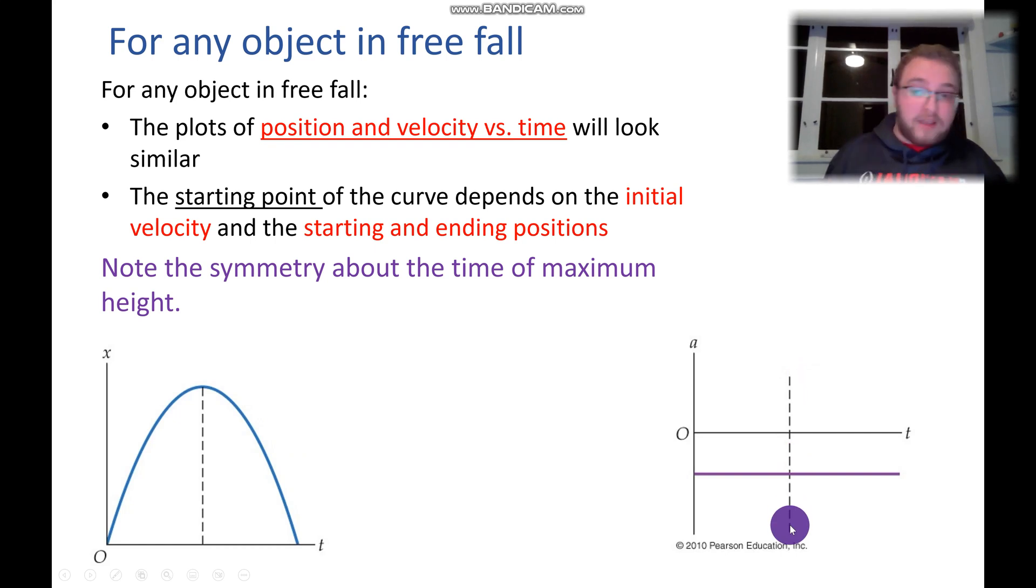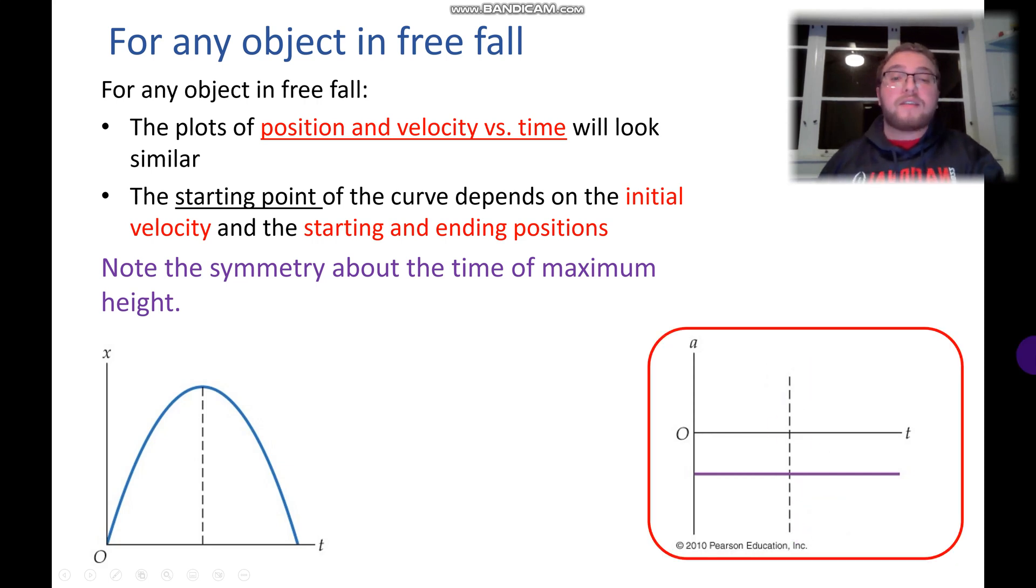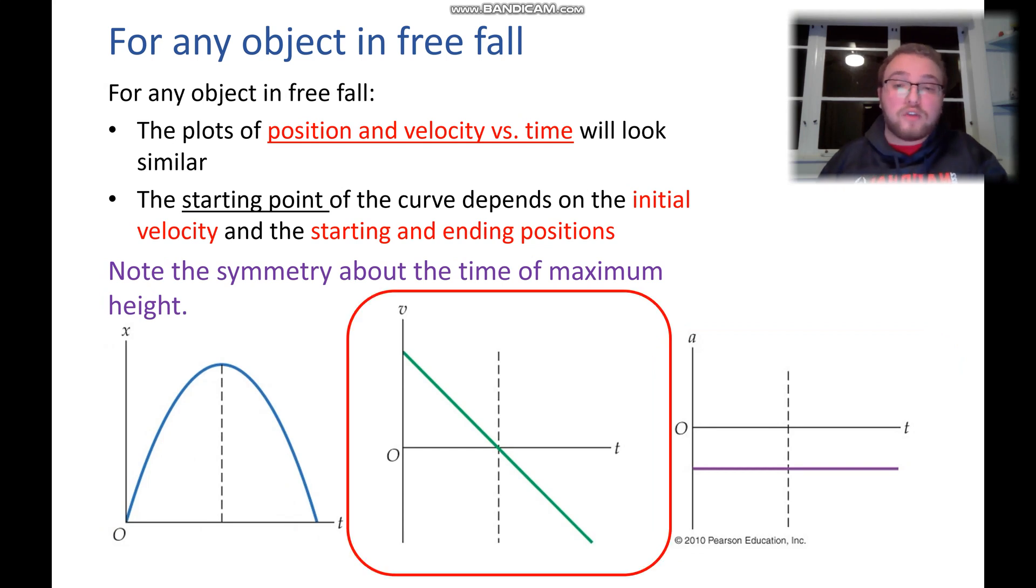Now that's much less exciting because our acceleration, as we know, is constant at 9.8 meters per second squared downwards. But at our maximum height here, we still have that symmetry on either side. This is also true for our velocity graph.